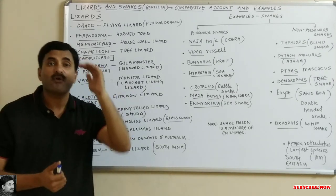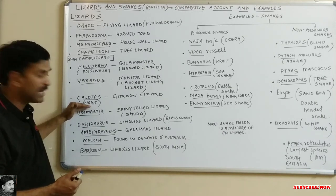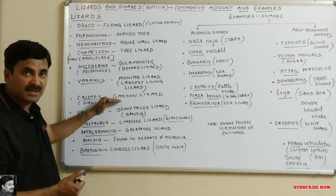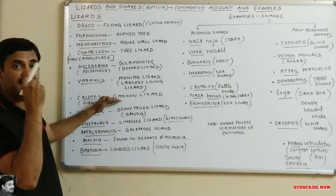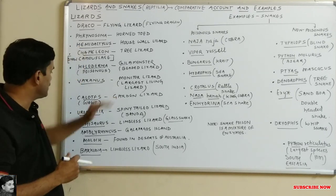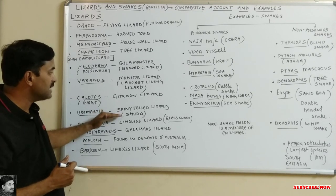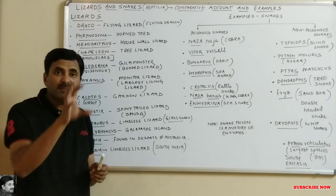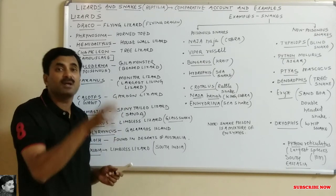Calotes is the most common lizard in India, also called the girgit or garden lizard. It changes color, particularly of the neck region, making it red or adapting to the surrounding medium. Uromastix is a spiny-tailed lizard also called the sanda. It is also called the oil lizard because oil is extracted from it which is used to cure muscular pains.